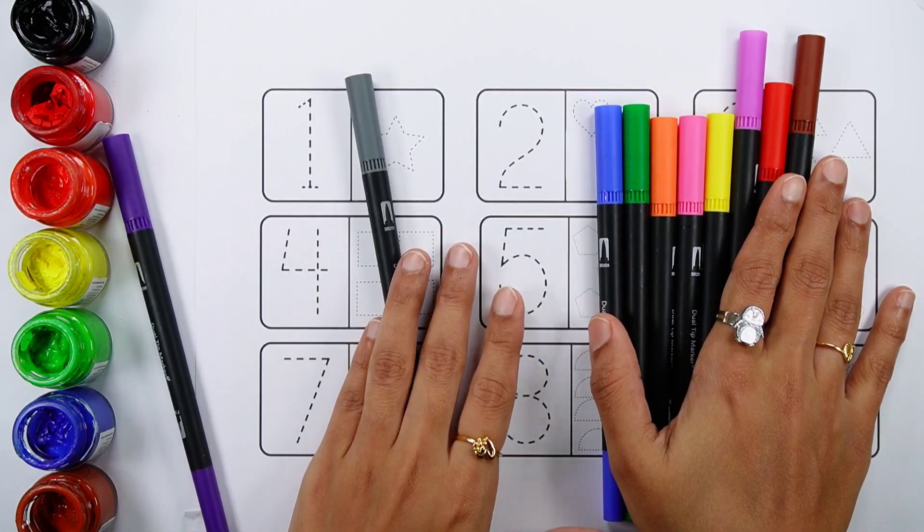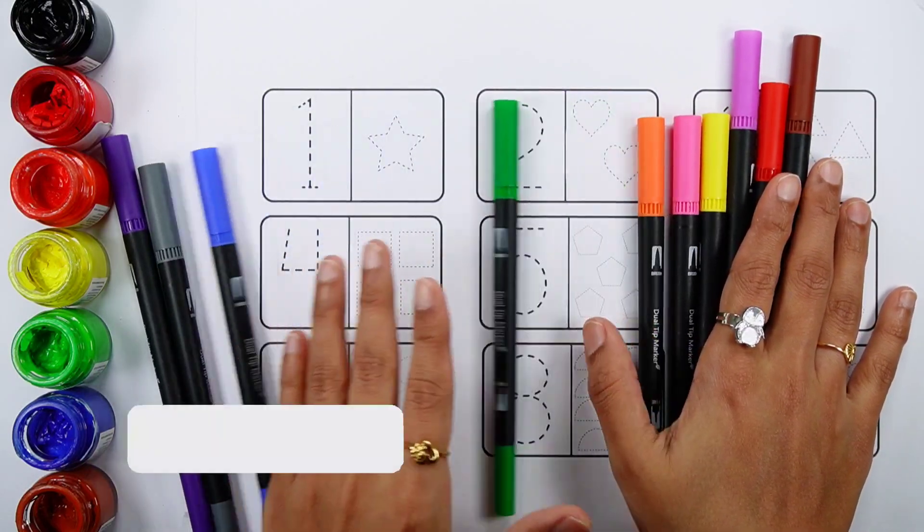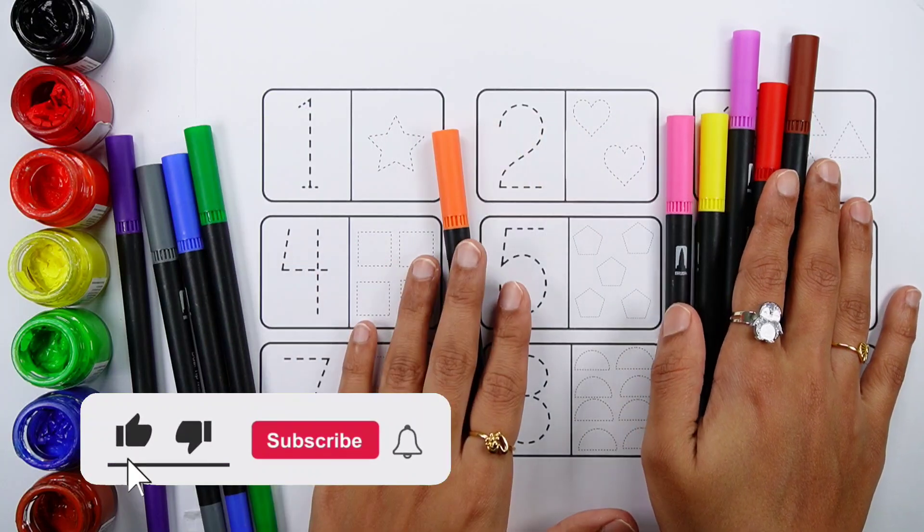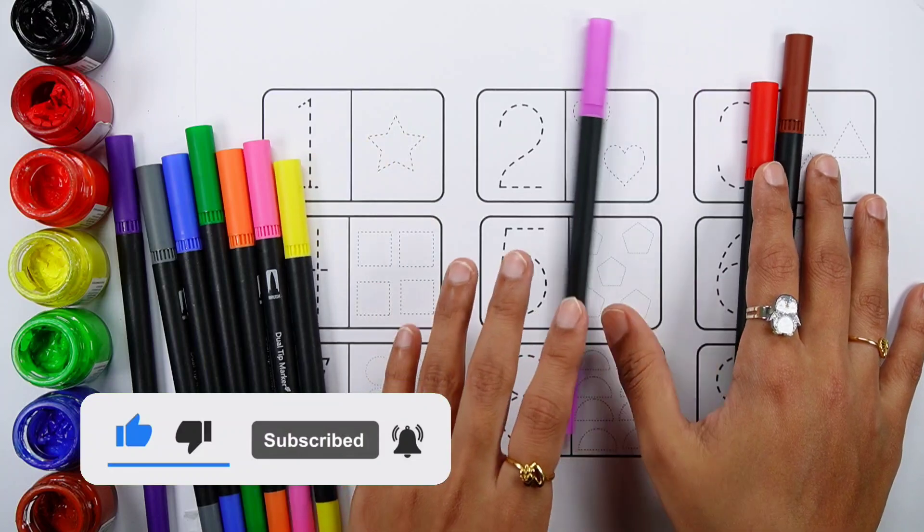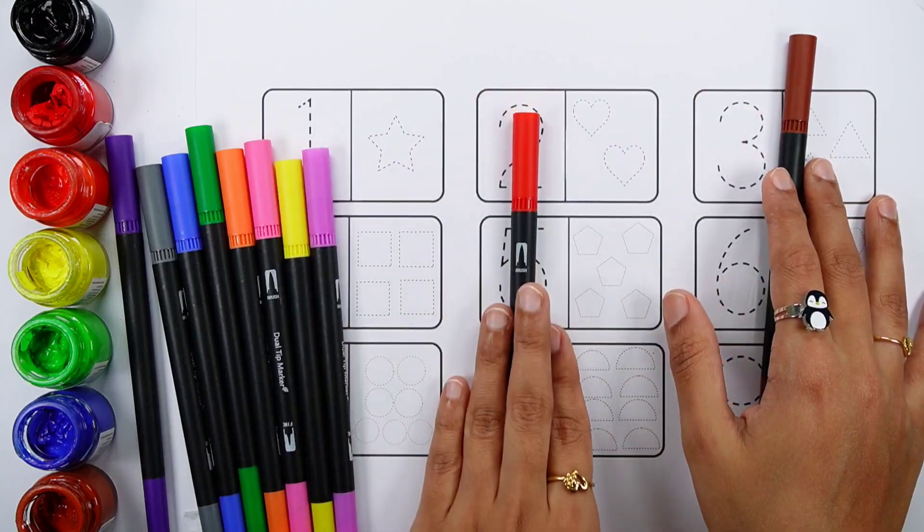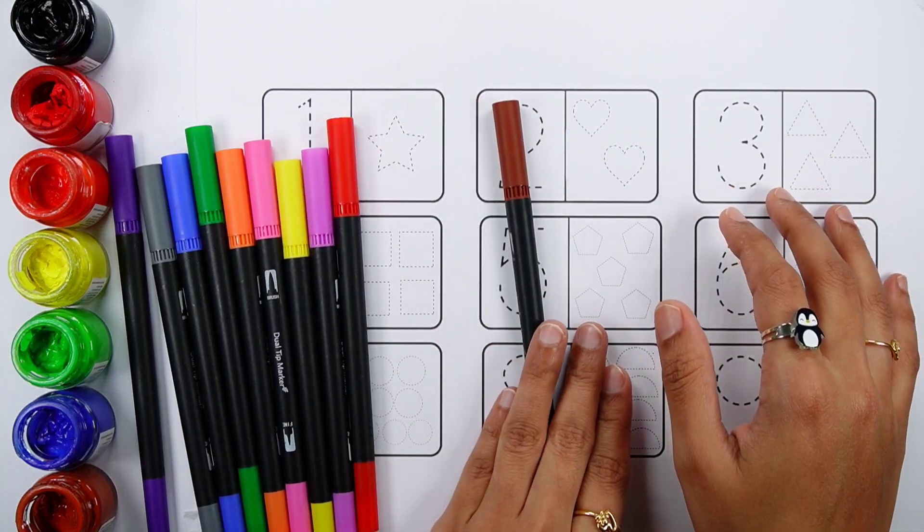Violet color, grey color, blue color, light green color, orange color, pink color, yellow color, purple color, red color, brown color.